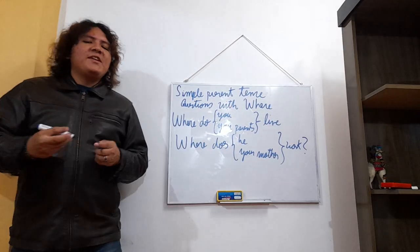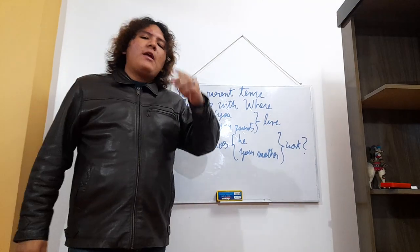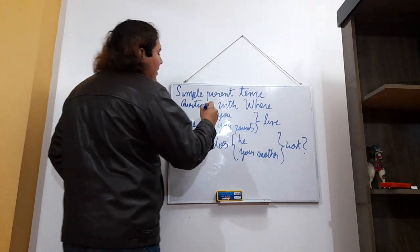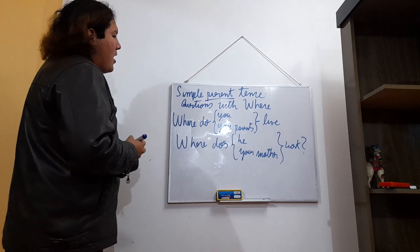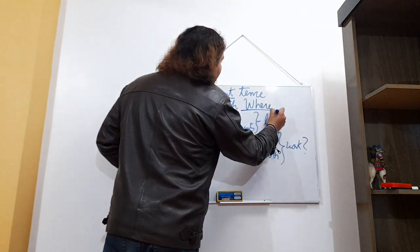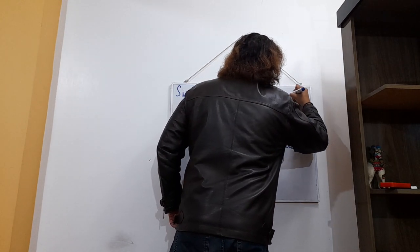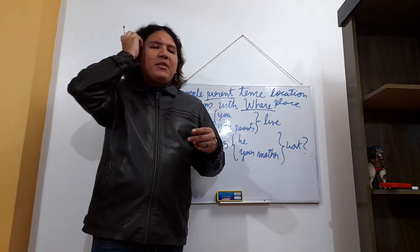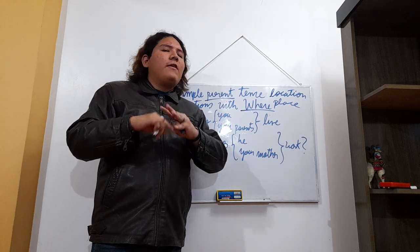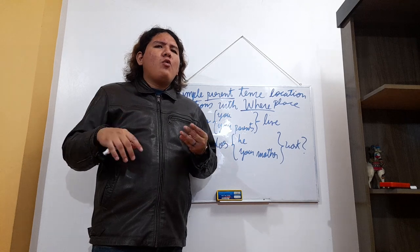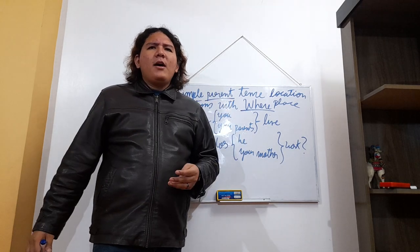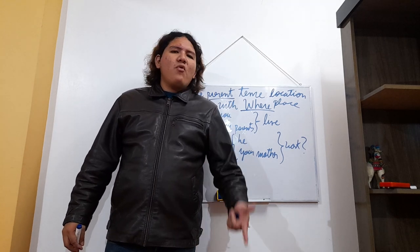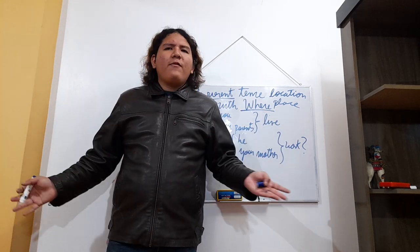Now for the grammar section — simple present tense. We use the word 'where' to indicate a location or place. For example: 'Where do you live?' or 'Where do your parents live?' We use the auxiliary verb 'do' because 'you' is second person and 'your parents' is plural. Other examples: 'Where do you work?' or 'Where do your parents work?' — using 'do' because these are second person or plural subjects.